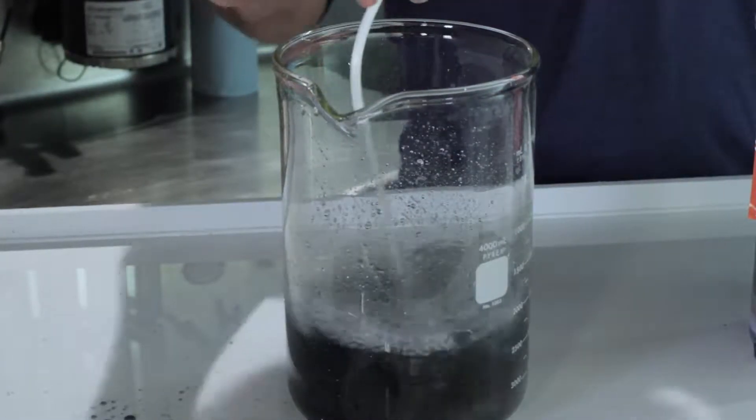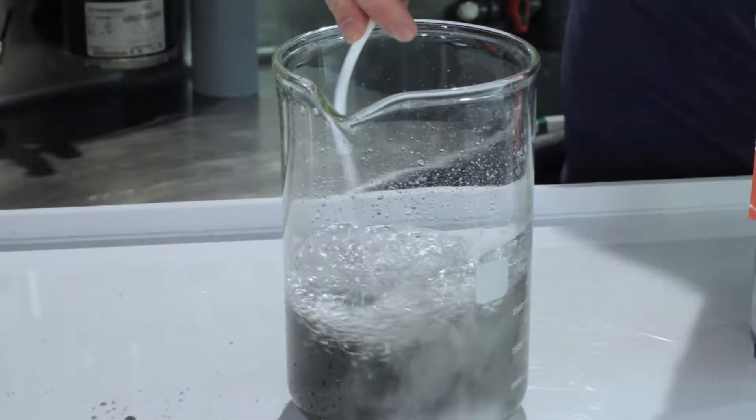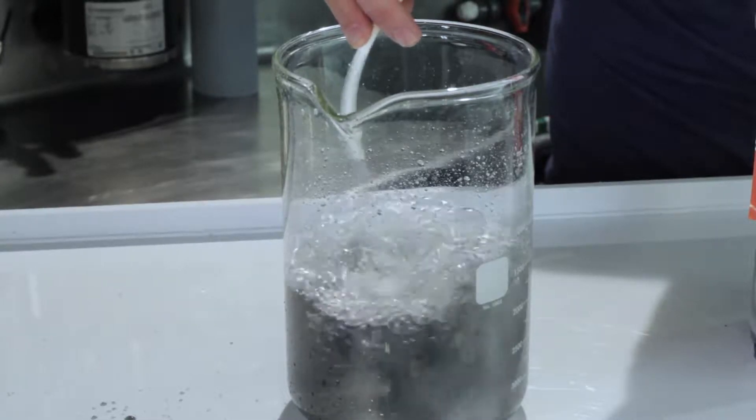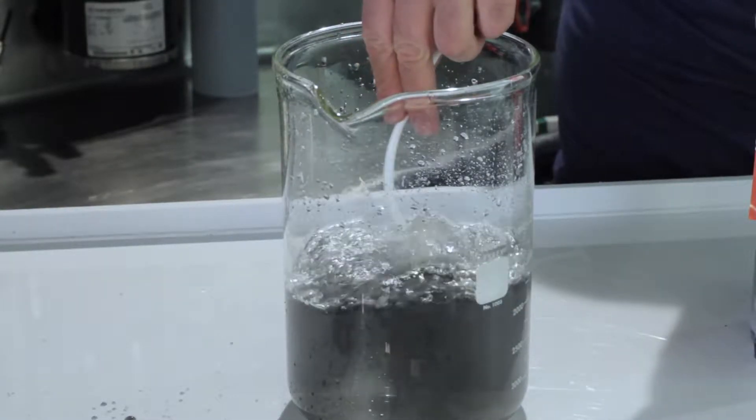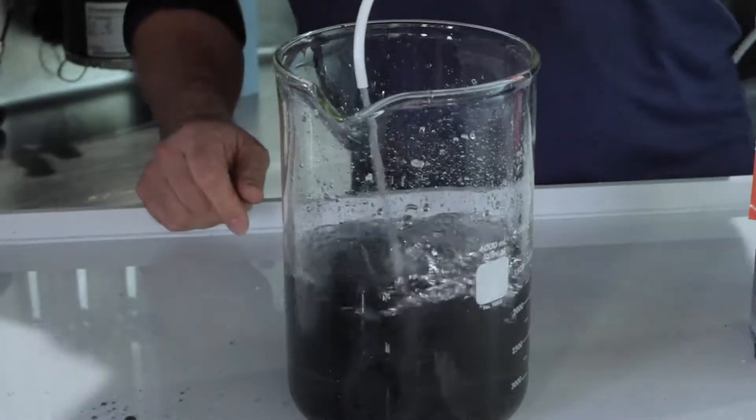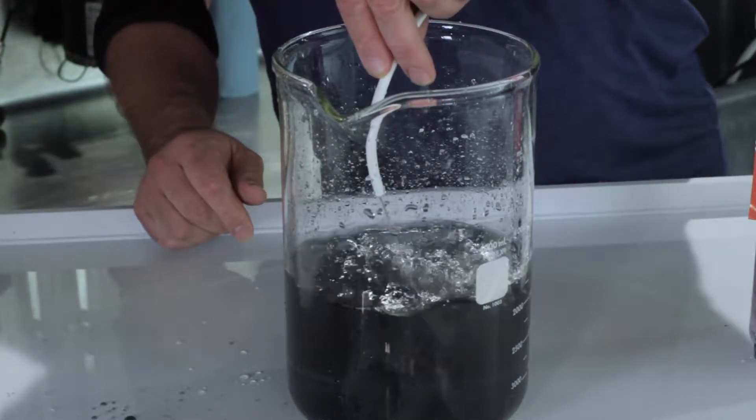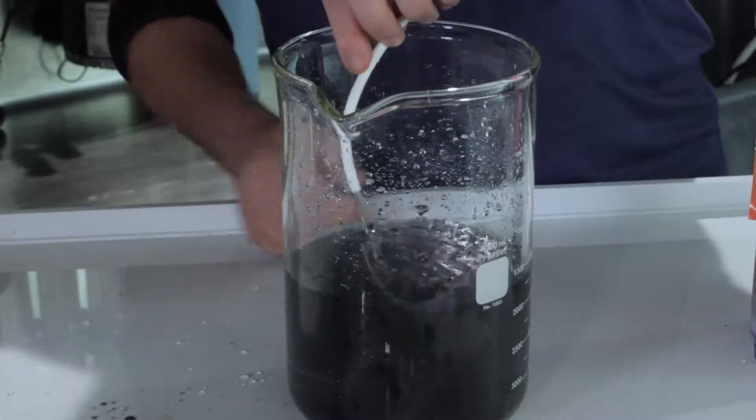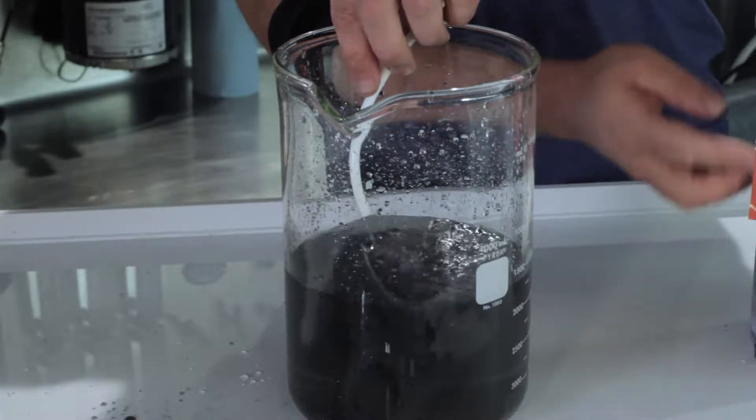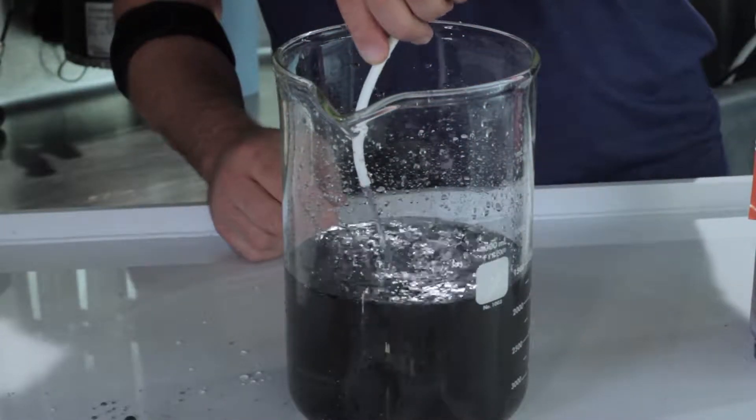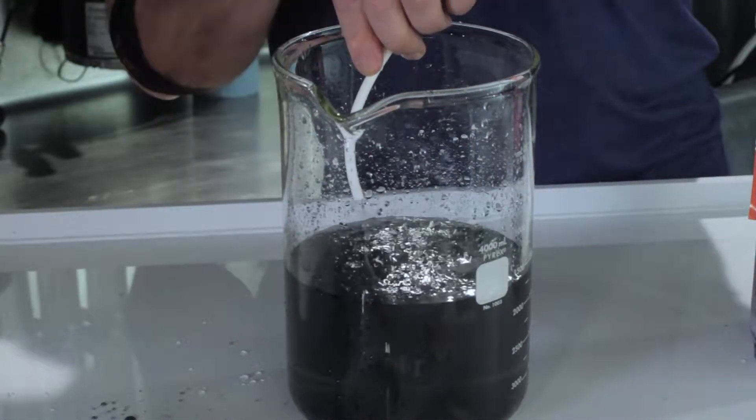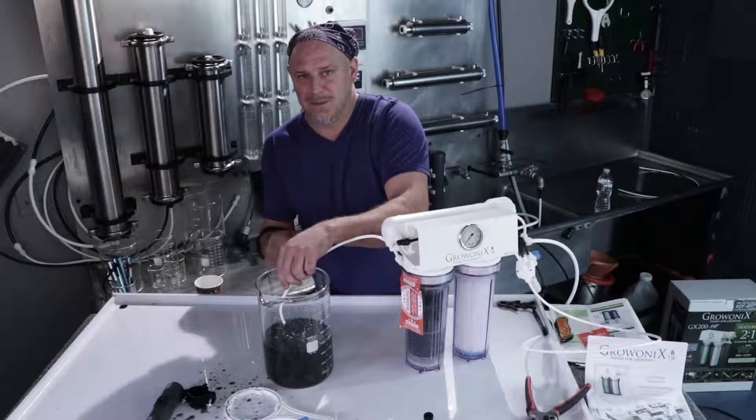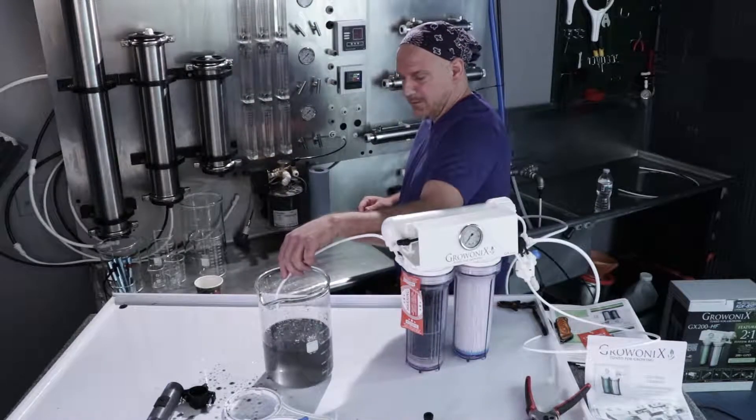You'll notice there's a lot of air bubbles. I'm going to turn the water pressure down a little. You're going to notice there's a lot of air pockets coming out with the carbon dust. That's because the carbon has a lot of air pockets in it. You want to run this until the water comes out as a smooth stream and there's no air pockets bubbling out.